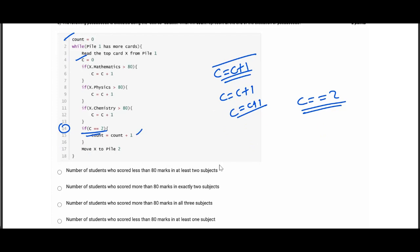Therefore, in that case, we are incrementing count in exactly two subjects. That's what the answer will be, because we are checking for C is two or not. Only if C is two, then we are updating the value of count. Hence, the answer will be in exactly two subjects.